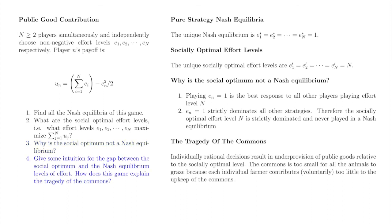This divergence between the Nash equilibrium effort levels and the socially optimal effort levels is captured by the tragedy of the commons. Individually rational decisions result in under-provision of public goods relative to the socially optimal level. The quintessential example is individual farmers who voluntarily contribute too little to the upkeep of the town commons resulting in overgrazing their collective livestock.